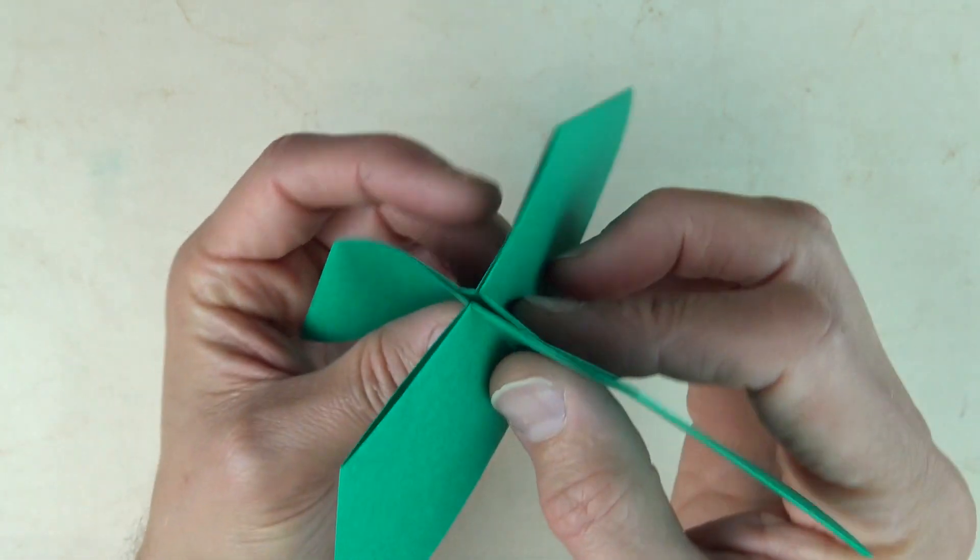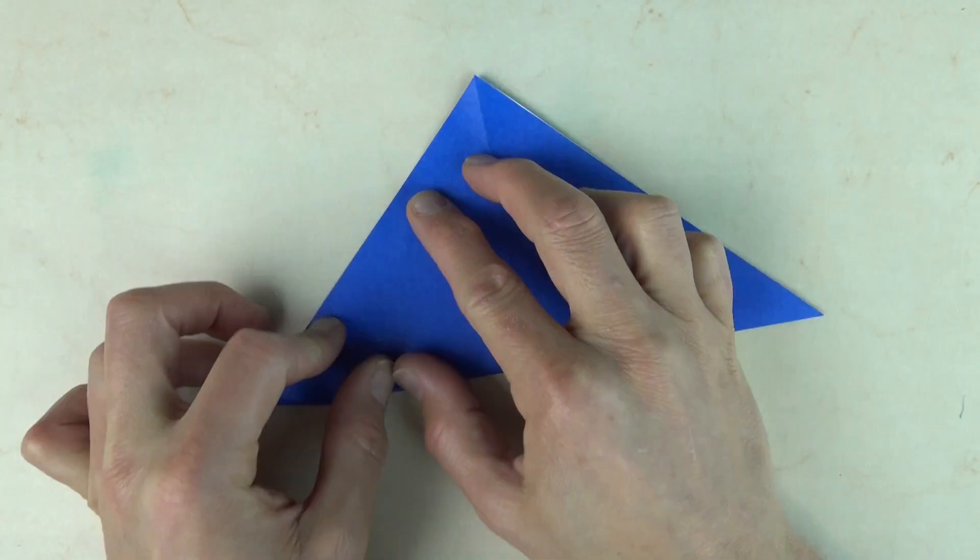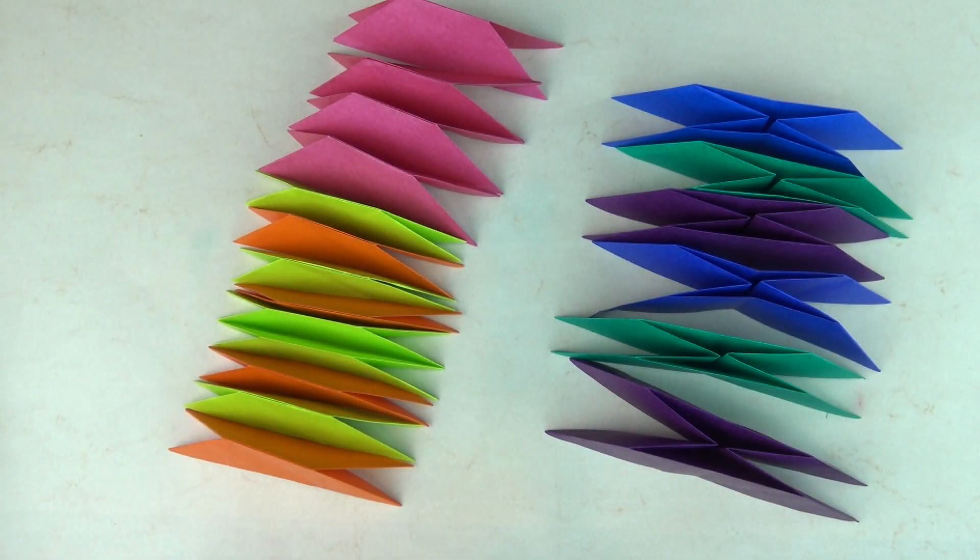And now we have to repeat that five more times. And I'm going to fast forward this part. Alright. So we've completed all 12 edge modules and all six vertex modules.